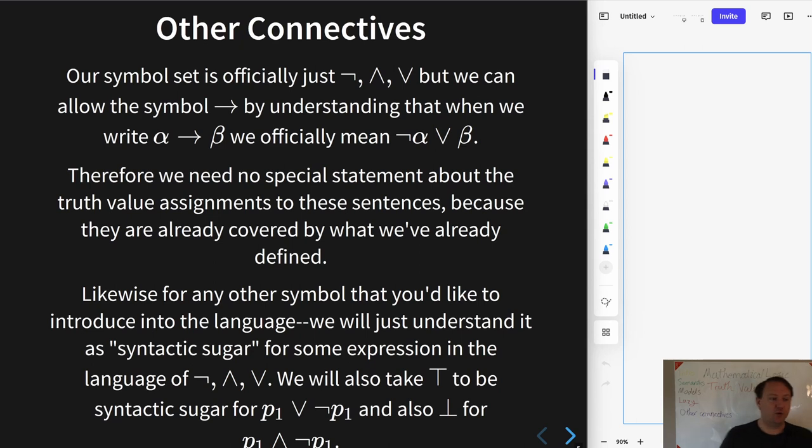Moreover, we will have a special symbol down here. This symbol is sometimes called top or verum and this is bot or falsum. And so the verum is basically an abbreviation for the sentence p1 disjunction negation p1. So in some sense this is like the canonical tautology. We'll talk more about tautologies later, but for now just as creating some syntactic sugar in our language.